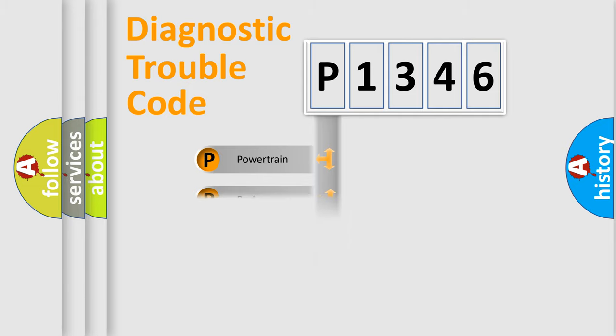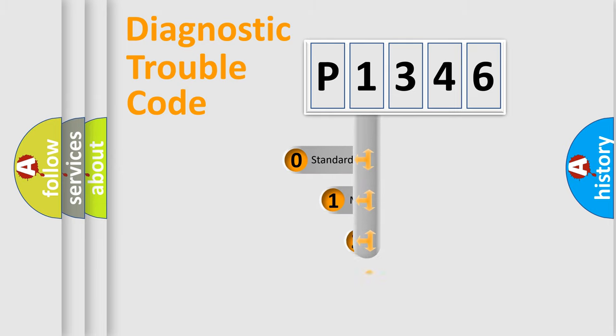Powertrain, body, chassis, network. This distribution is defined in the first character code.